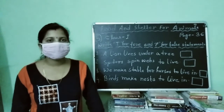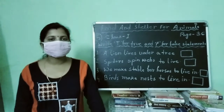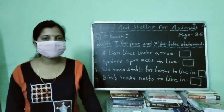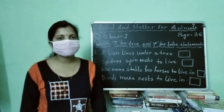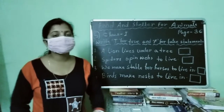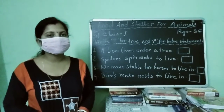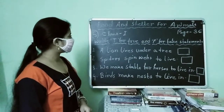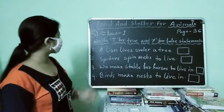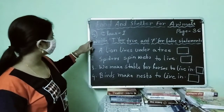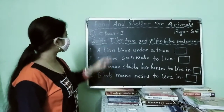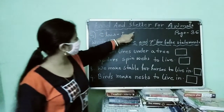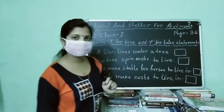My dear students, again I come here to teach you next class. Today I am going to teach you Amazon Science of class 1, page number 36, chapter 5, and chapter name is Food and Shelter for Animals.